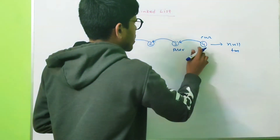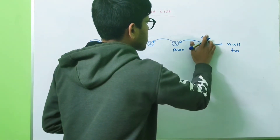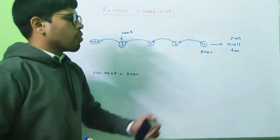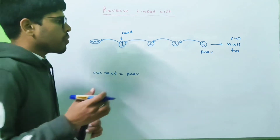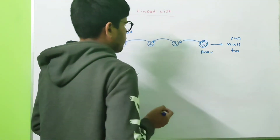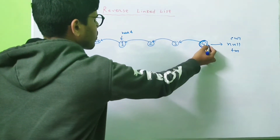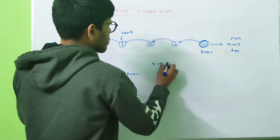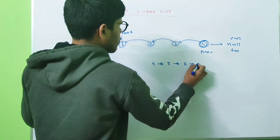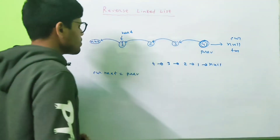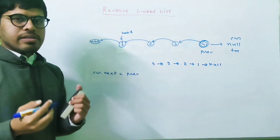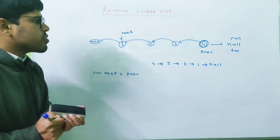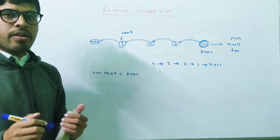We move prev to current and current to temp. Now current is pointing to a null node. When current points to null, we return the node where prev points to. Returning prev means we're returning the head of the reversed linked list — 4 3 2 1. This is how we reverse a single linked list iteratively. This is called the iterative solution. Now let's code up this problem.